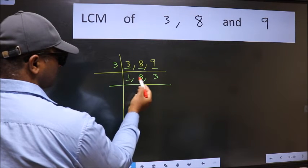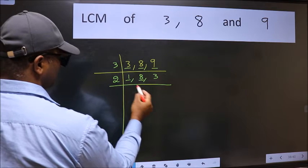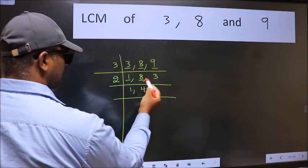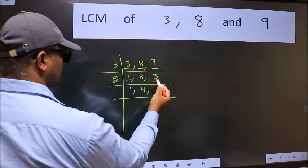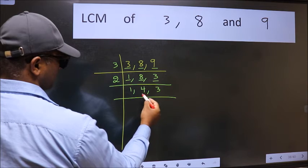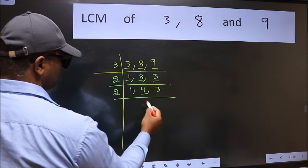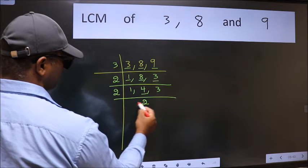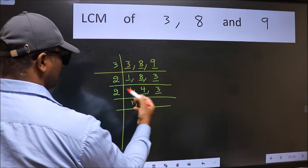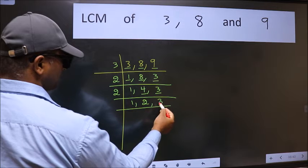So focus on to the next number 8. 8 is 2 times 4. The other number 3 is not divisible by 2, so we write it down as it is. Now here 4 is 2 times 2. The other number 3 is not divisible by 2, so we write it down as it is.